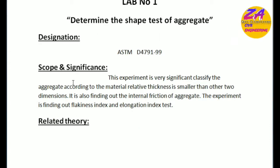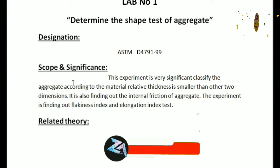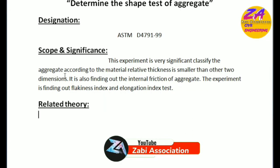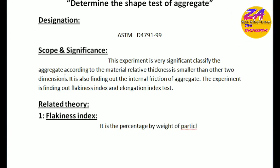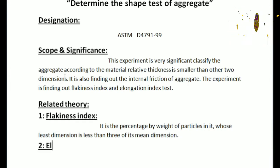After this, related theory. In related theory, flakiness index: what is flakiness index? It is the percentage by weight of particles in which the least dimension is less than three-fifths of the mean dimensions.